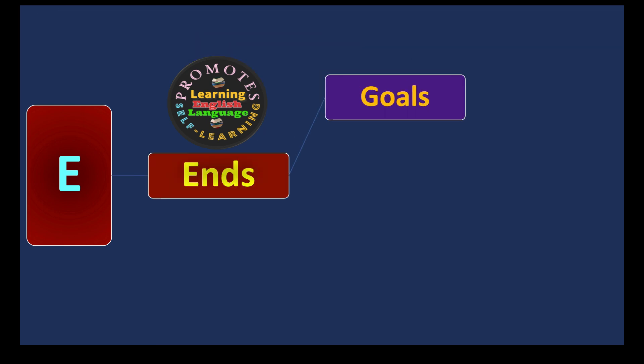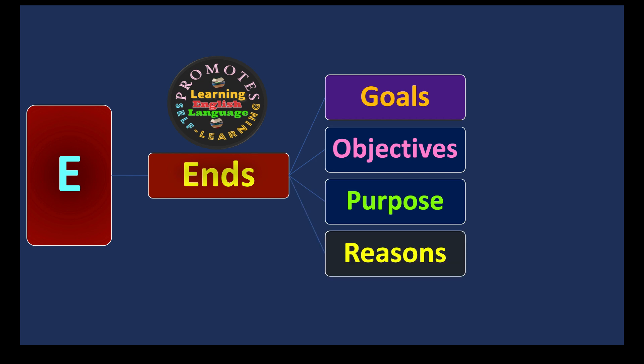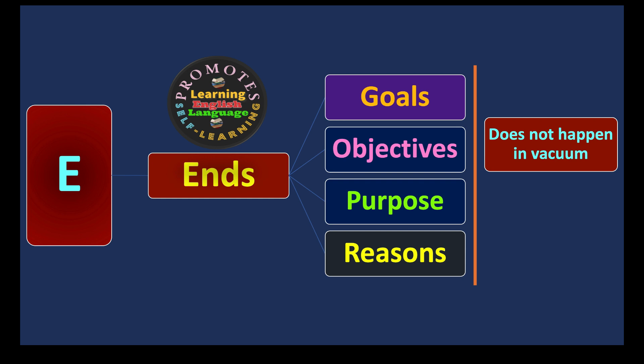E stands for Ends, referring to goals, objectives, purposes, and reasons. There must be some goals for any communication to take place. If you don't have any goal or purpose, the communication cannot occur. Communication does not happen in a vacuum — you must have something to achieve, something to attain, something to talk about.